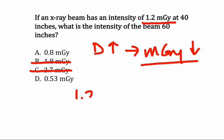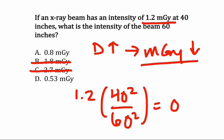We simply start with our initial intensity of 1.2, multiply it by the ratio of the square distances, which is 40 squared over 60 squared, and that's going to give us a new intensity of 0.53. And so we know the answer is D.